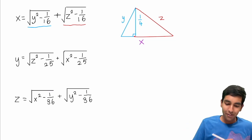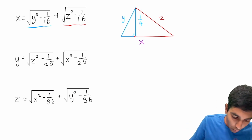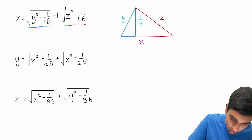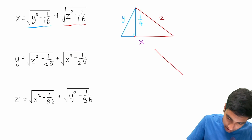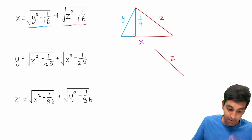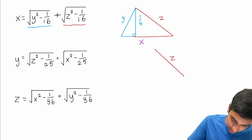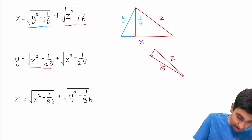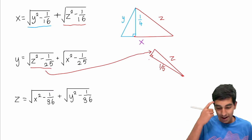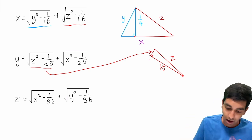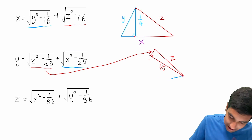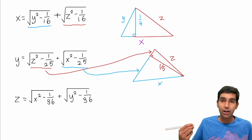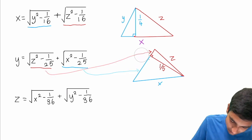We can use very similar logic on the next equation. We have y equals the square root of z squared minus 1 over 25. So we have z as the hypotenuse and an altitude of 1 over 5, giving us the square root of z squared minus 1 over 25. Similarly, by the same Pythagorean theorem logic, this gives the square root of x squared minus 1 over 25, and together they form y.